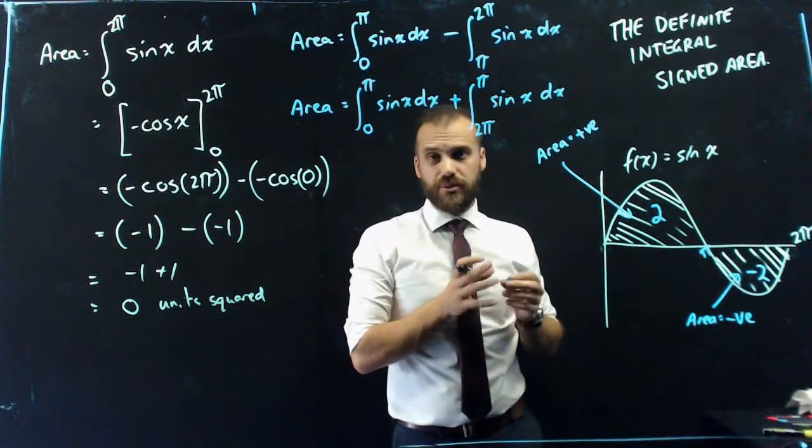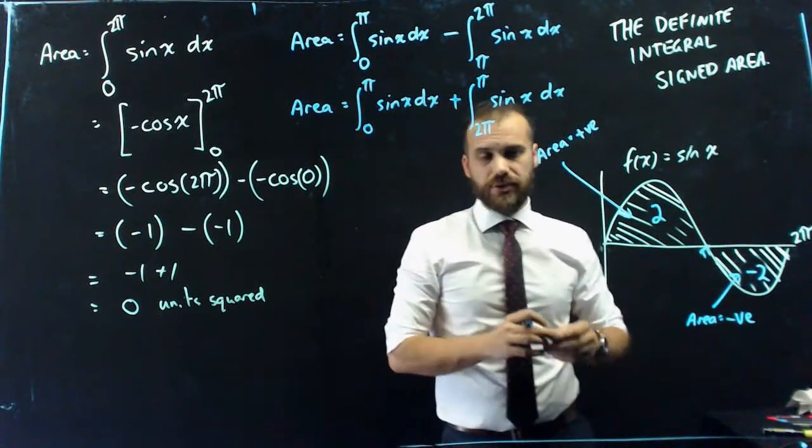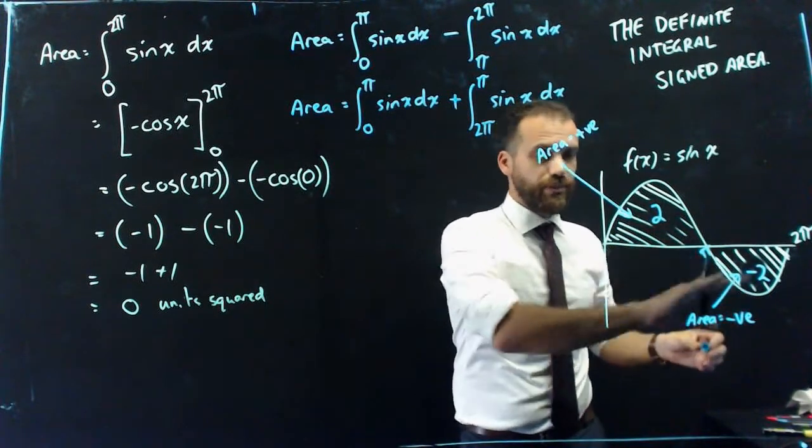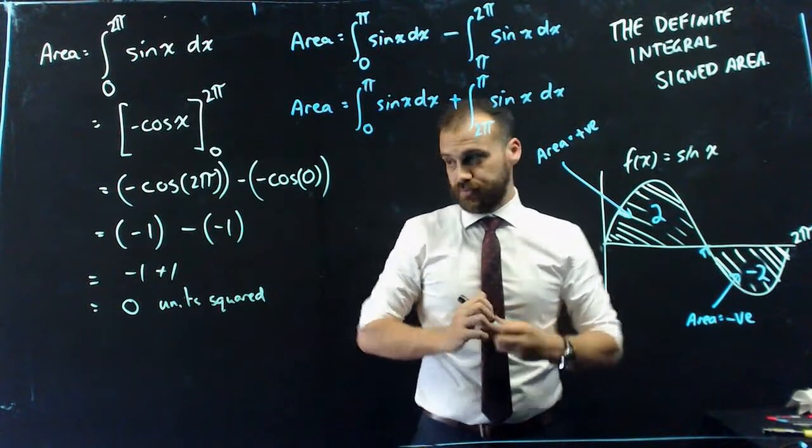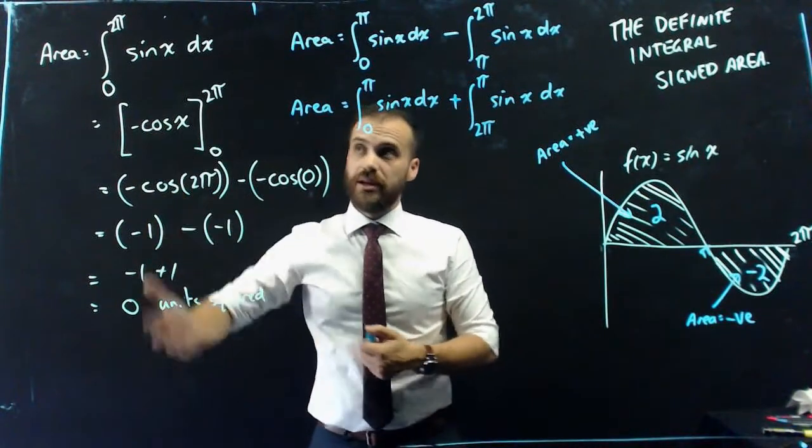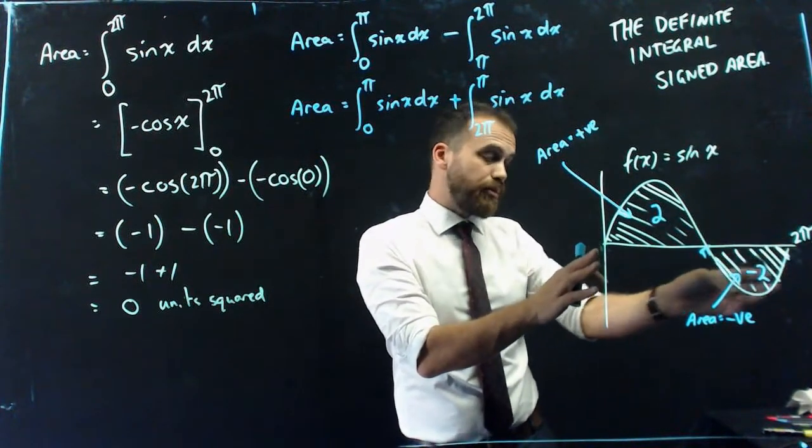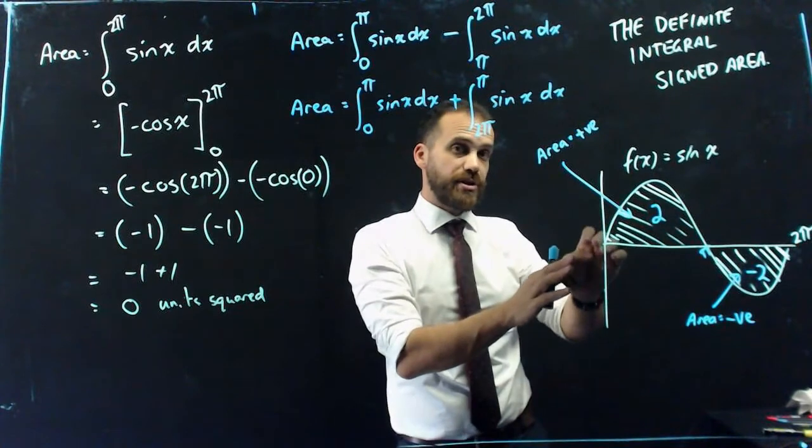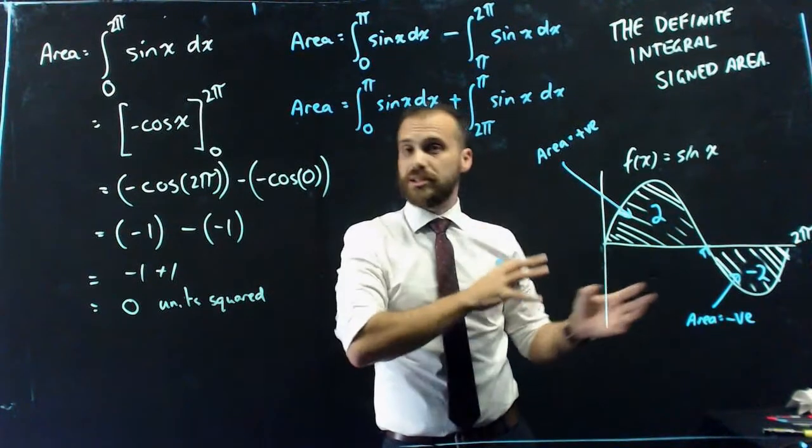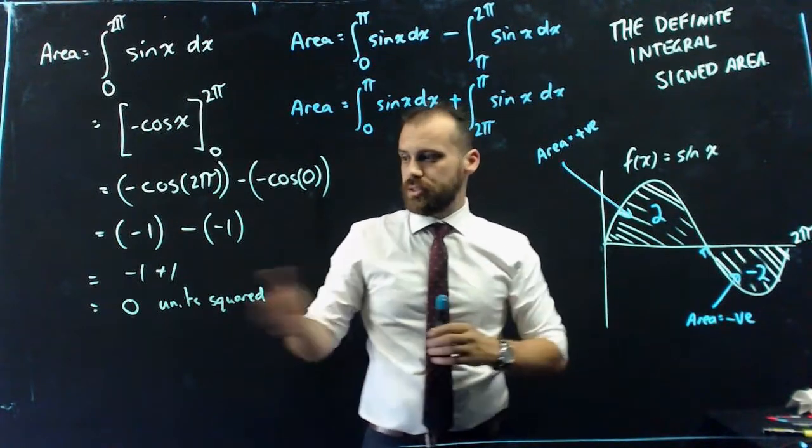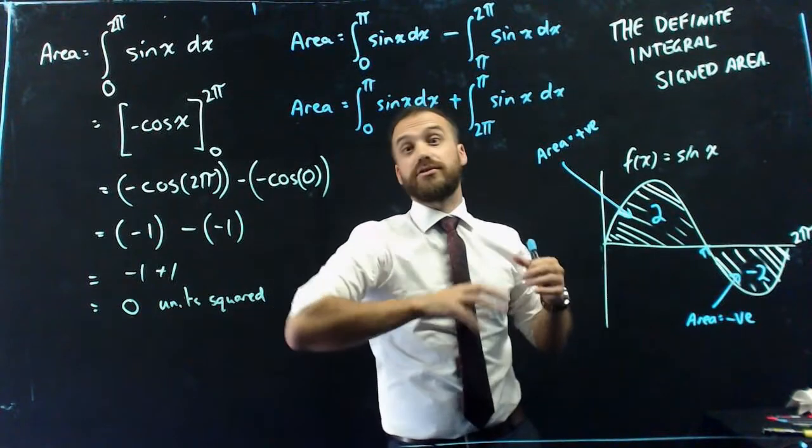So that's how signed area works. The definite integral is going to give you a negative if the curve is below, a positive if the curve is above. And as you've seen here, if you do the definite integral from here to here, where some of it's below and some of it's above, then they're going to cancel each other out in some way. This is an extreme case where they cancel each other out completely.